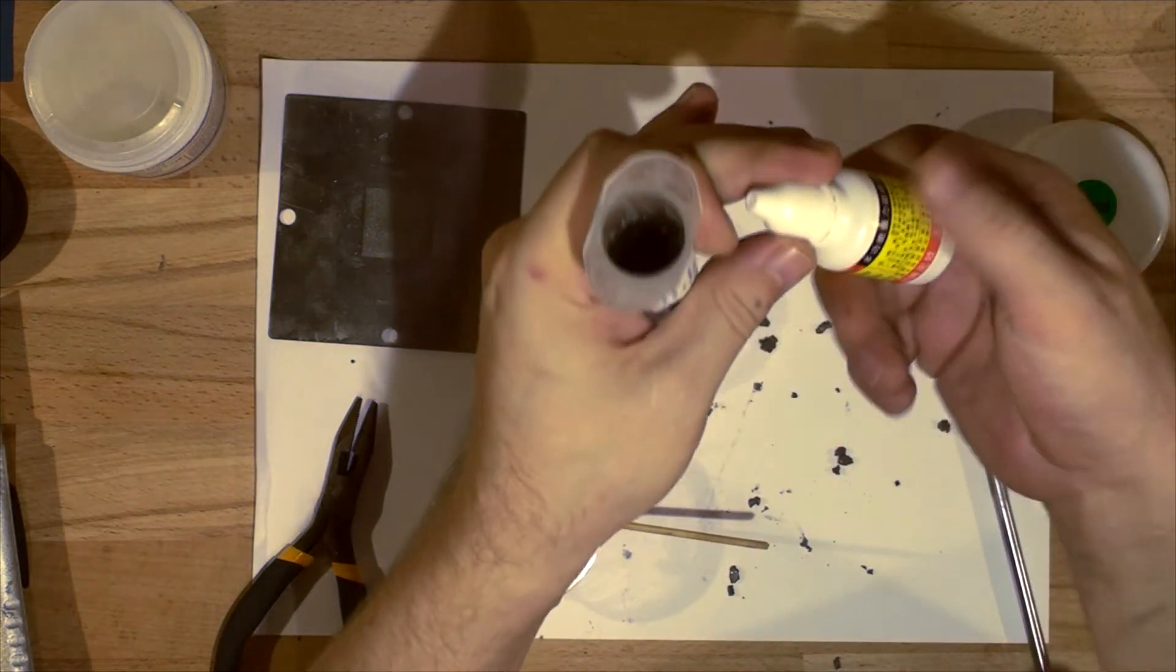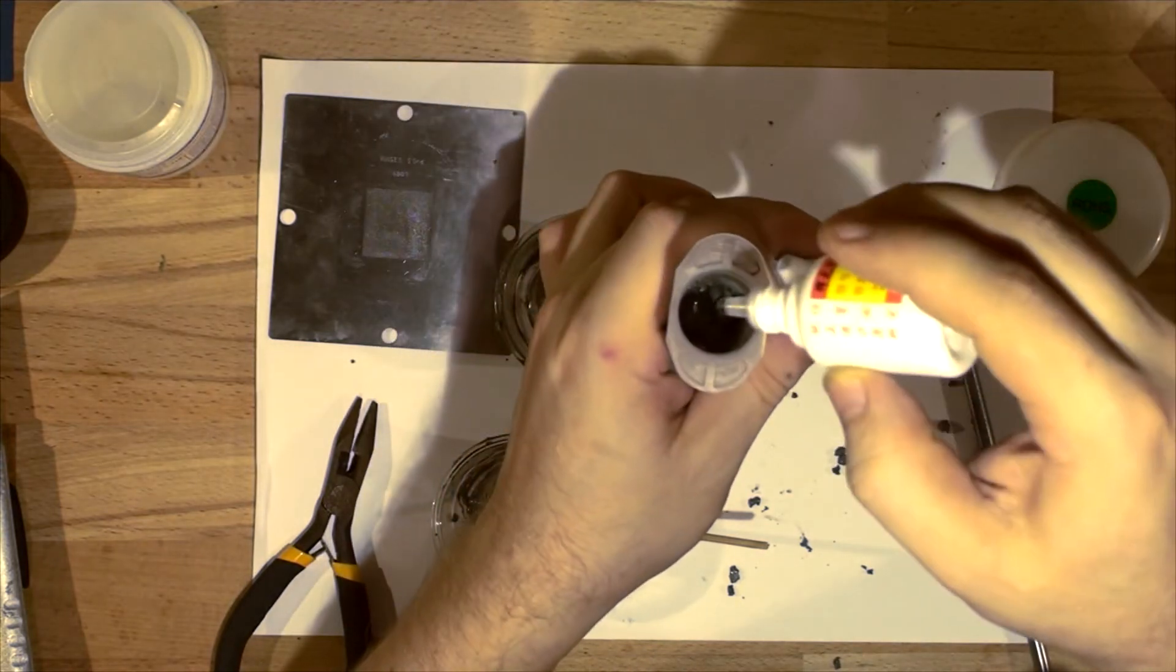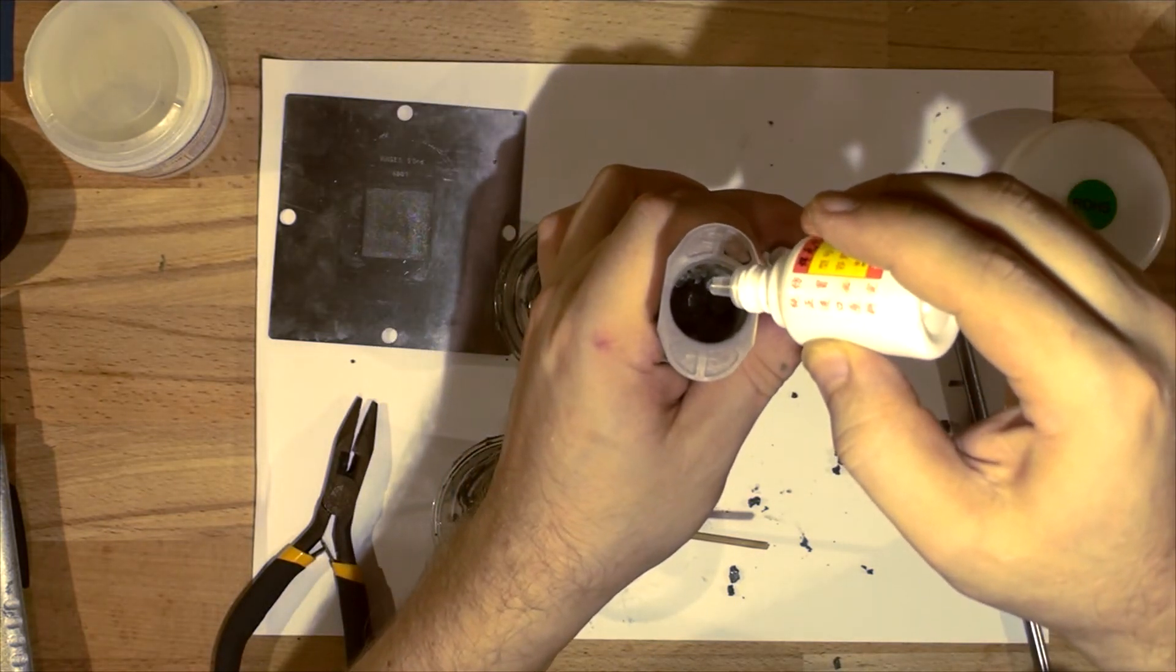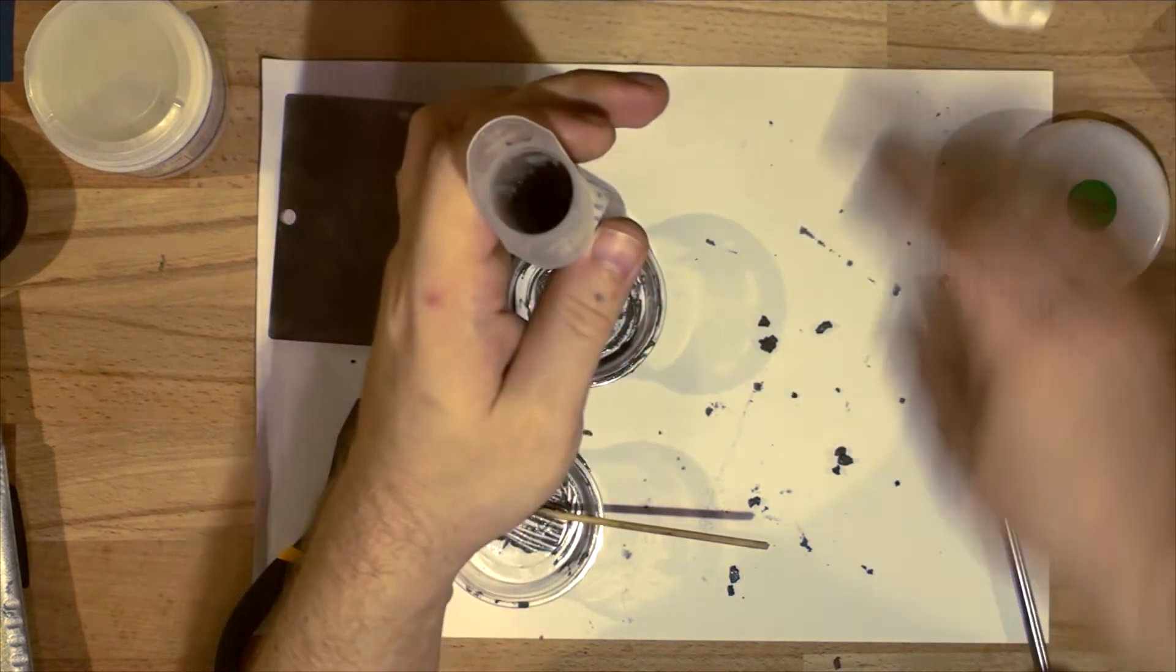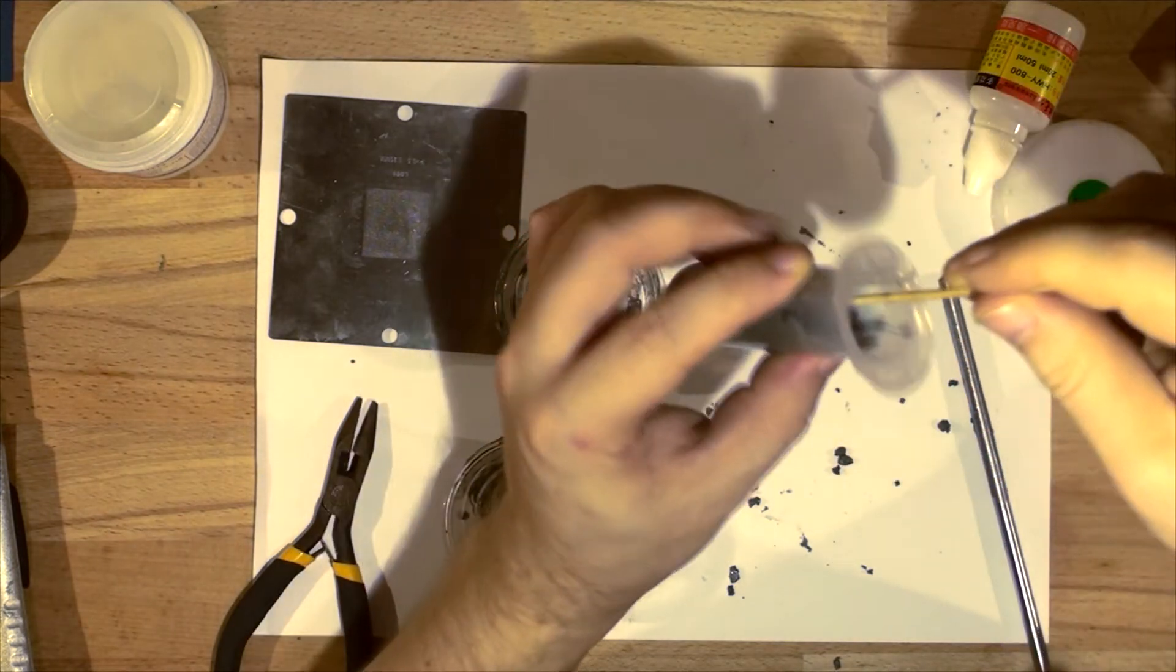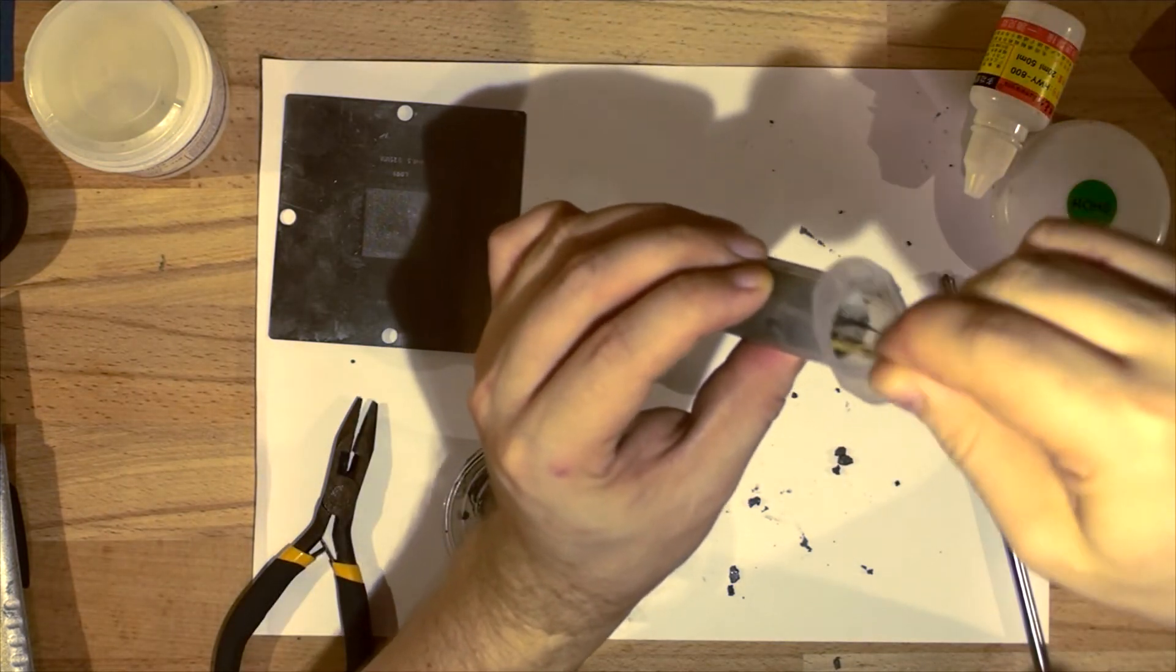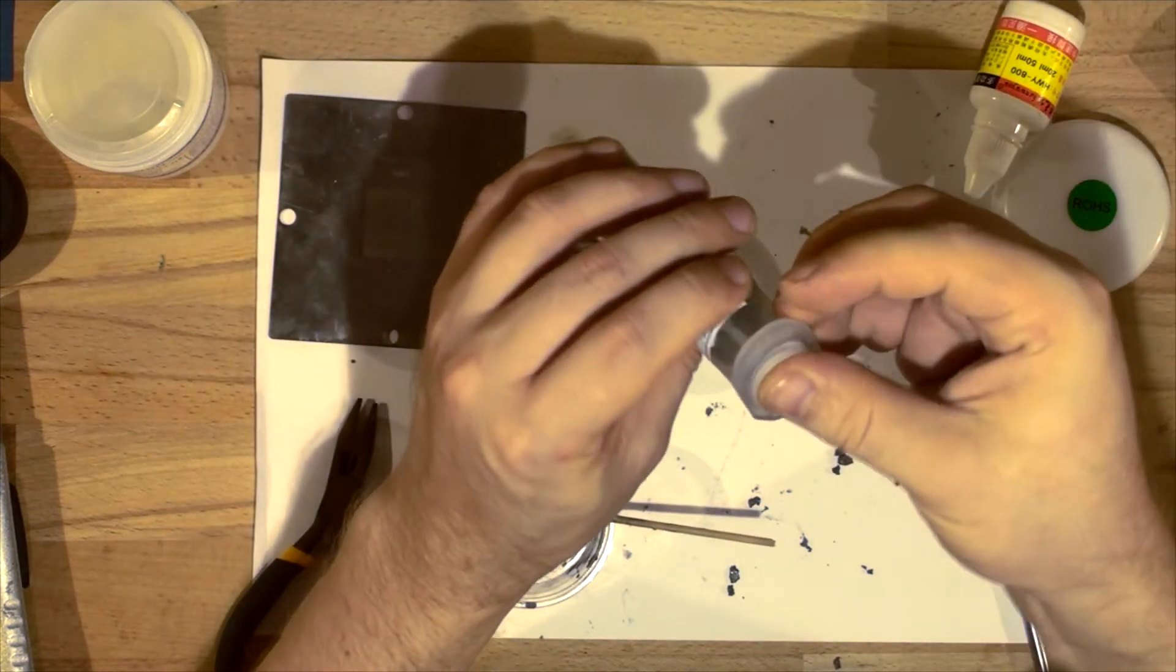Now I'm going to add a little bit of the 800 no-clean flux, just a couple of drops into the syringe, maybe about five drops. And I'm going to stir it inside the syringe. This way it helps to get all the air bubbles out and let it settle properly. Sweet. Now we're just going to replace the plunger.